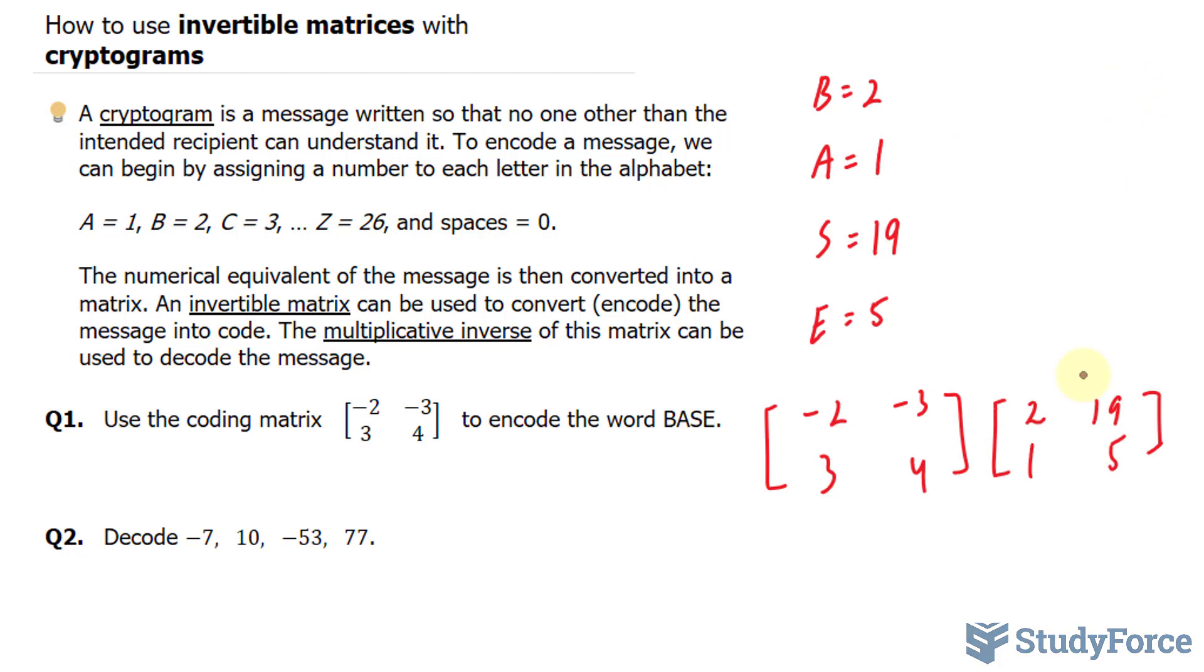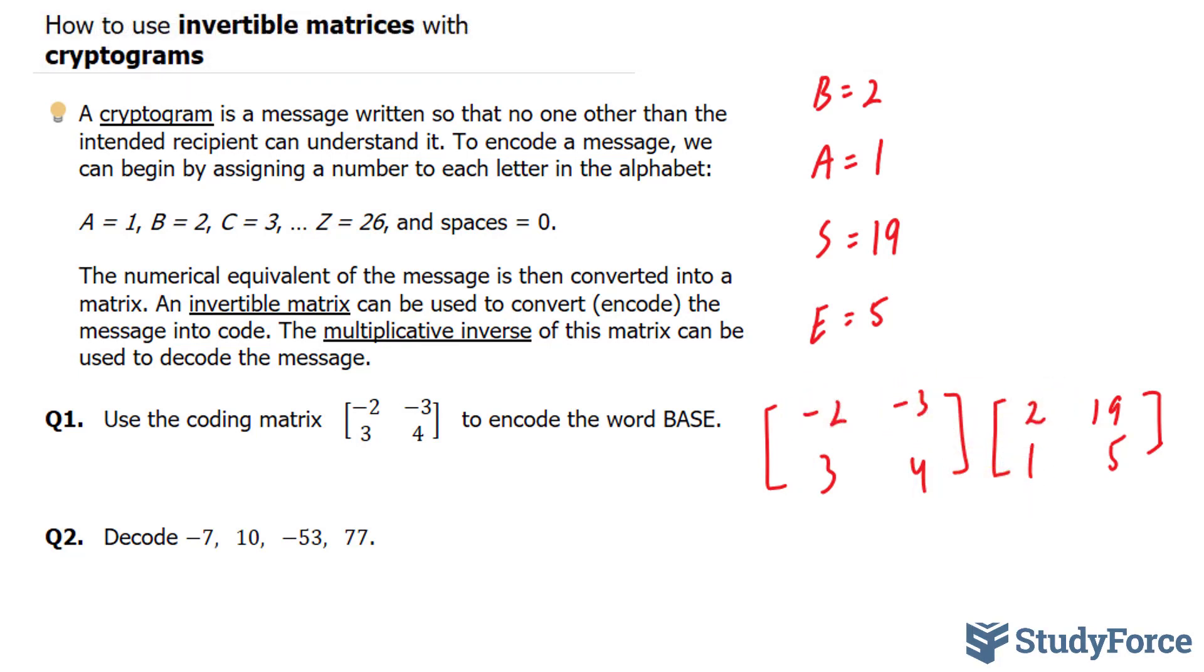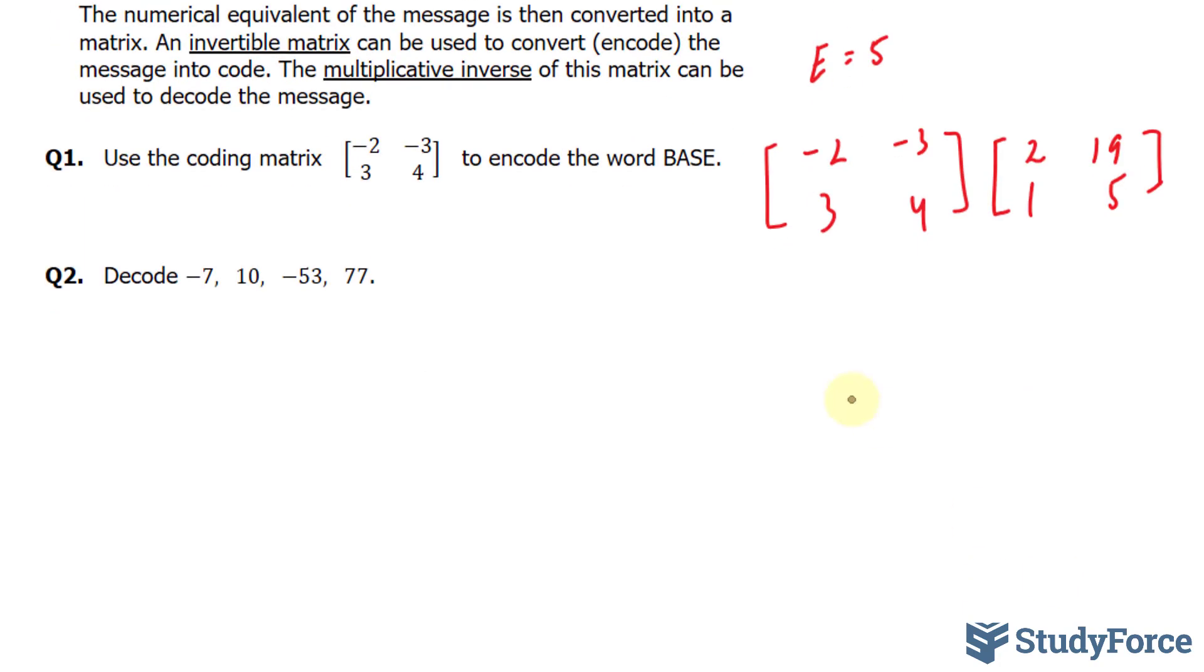Now that I have it positioned, I can go ahead and multiply these out. I'll start with the first element. We have -2 times 2 plus -3 times 1. I'll show you the first two. So we have -2 times 2 plus -3 times positive 1.